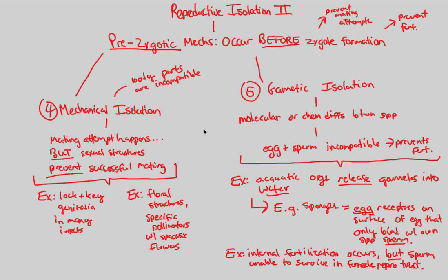Overall, we've covered five different reproductive isolation mechanisms. Mechanisms four and five are the only ones that don't directly prevent mating attempts but do prevent fertilization. Mechanisms one through three are mainly dedicated to preventing mating, and thus preventing fertilization as a result. The overarching idea is speciation and macroevolution — a good way to diverge species is to ensure they're reproductively isolated using prezygotic mechanisms. In the next video, we'll look at postzygotic mechanisms and what happens if sperm plus egg do meet.